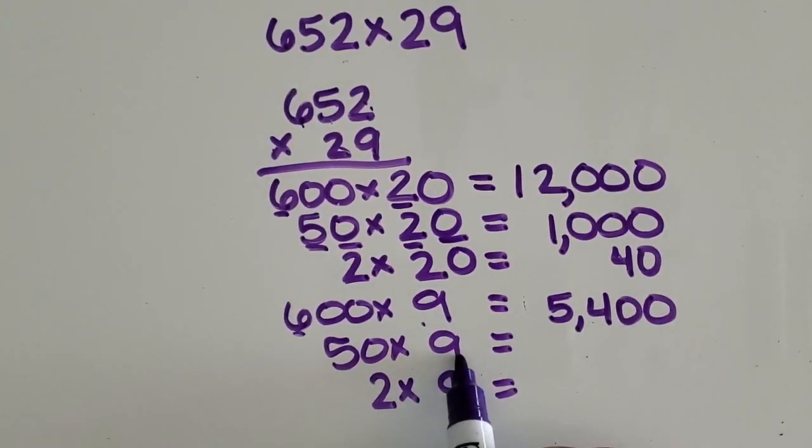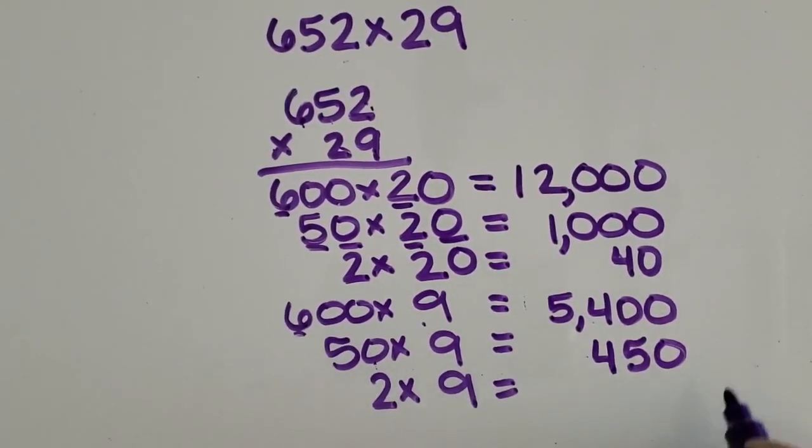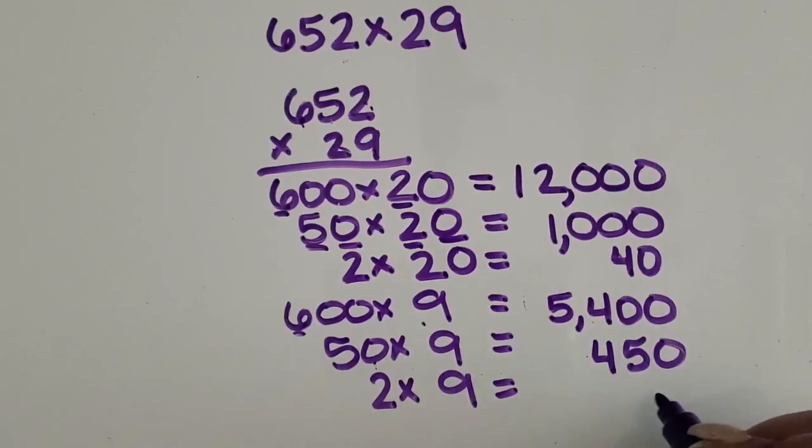5 times 9 is 45. 10 times greater than that is 450, so that's going to be 3 digits. And then 2 times 9 is 18.